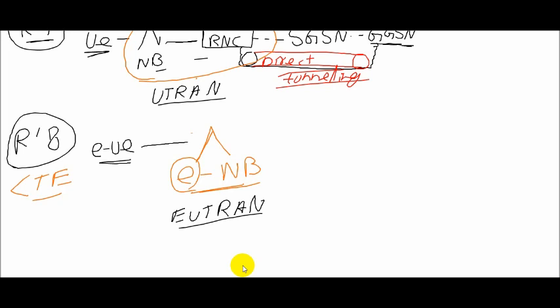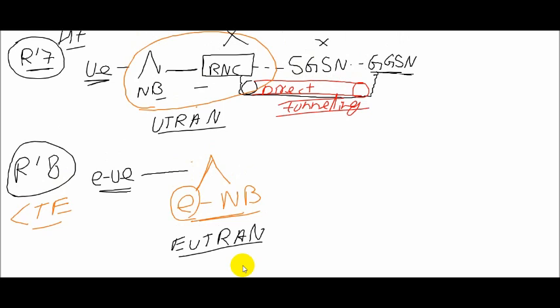Now we start calling it as eUTRAN. Because here in LTE, the only RF part, the element which is having the RF components, is the eNodeB only. It's in the base, in the tower. It is the only thing carrying all the RF functionalities—single node—so you start calling it as eUTRAN. This is the RF part.